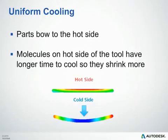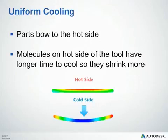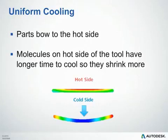We would also like to strive for uniform cooling in your parts. When cooling a part, the mold surface temperature should be uniform on both sides of the part. When the temperatures are not uniform, the molecules on the hot side have a longer time to cool, so they shrink more than on the cooler side. This essentially creates a tensile force on that warm side and makes your part bow towards the hot side of the part, as shown in the image below.